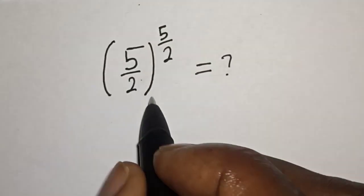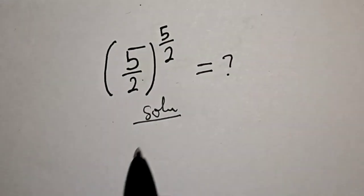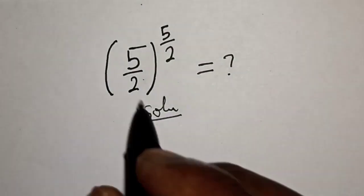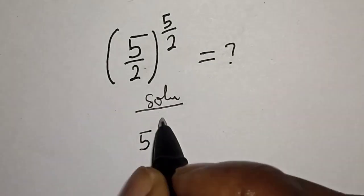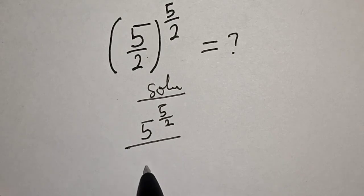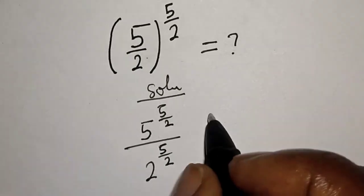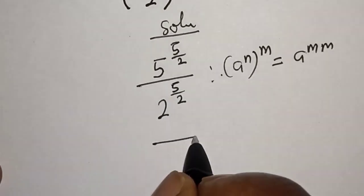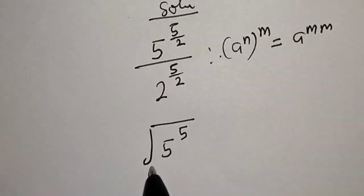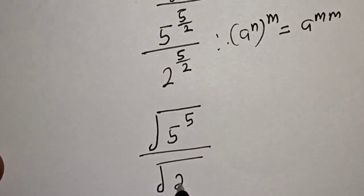For the solution, we have 5 divided by 2, raised to the power of 5 divided by 2. This can be written as 5 raised to the power of 5 over 2, divided by 2 raised to the power of 5 over 2. This gives us the square root of 5 raised to the power of 5, over the square root of 2 raised to the power of 5.